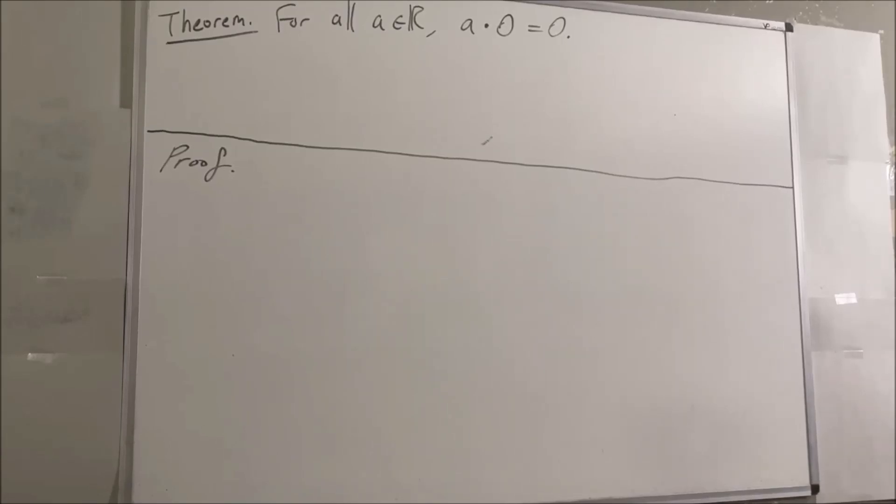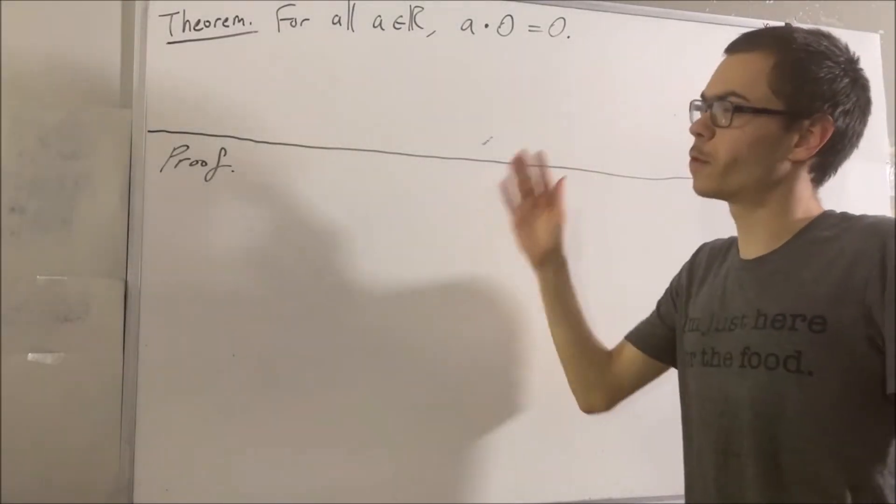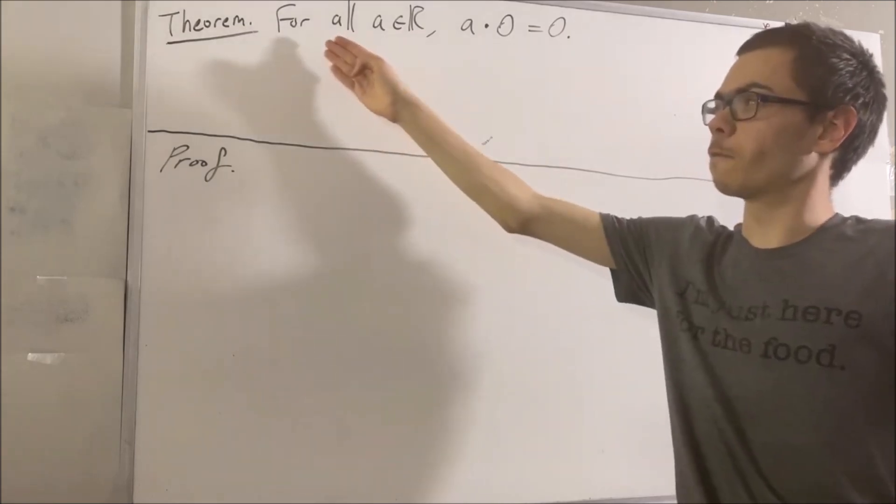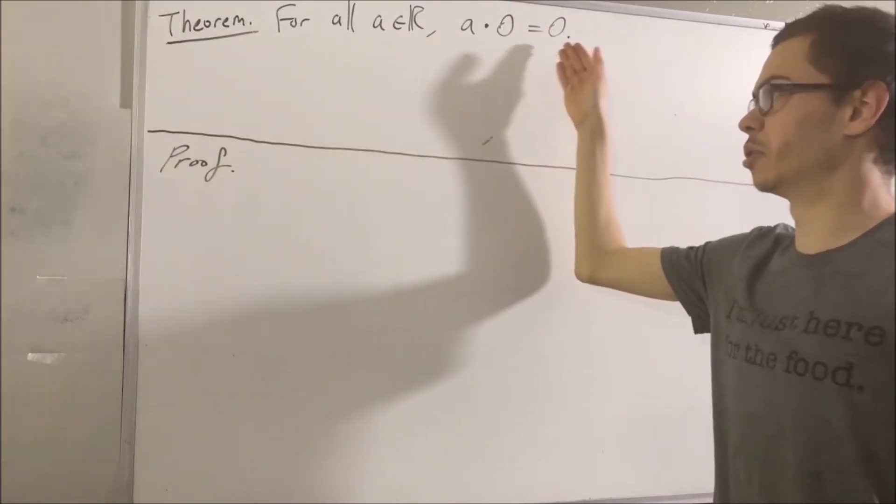Hello! In this video, we are going to prove the following theorem. For all real numbers a, a times zero is equal to zero.